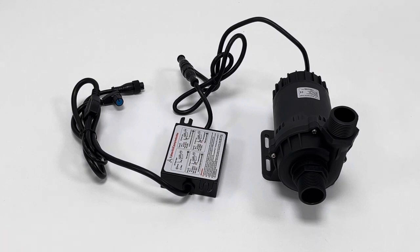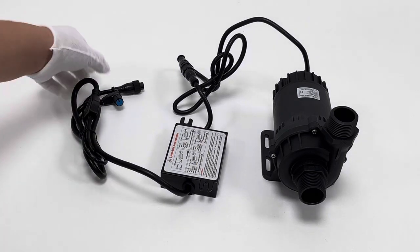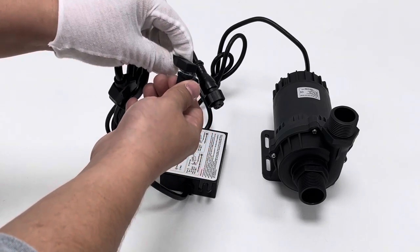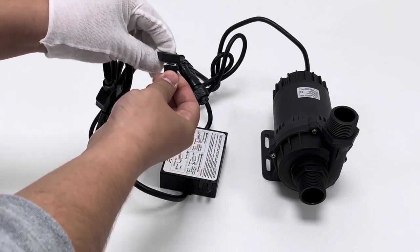This one, DCDE2410A1 model. The pump supports speed-adjustable function through rotating the potentiometer knob. Very flexible when it is used.